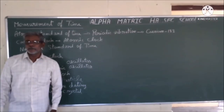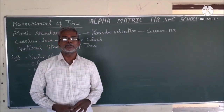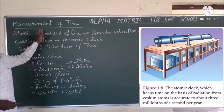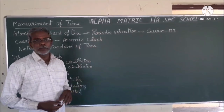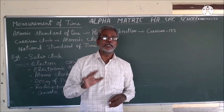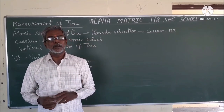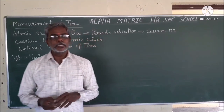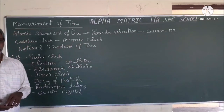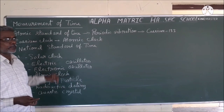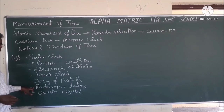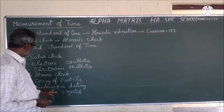Measurement of time. How can you measure time? With the help of a clock. The unit of time is the second. The atomic standard of time is based on electronic vibrations produced in a cesium-133 atom. This cesium clock is also called an atomic clock because it is highly stable and is used as the national standard of time. Some examples of time measurement instruments are: solar clock, electric oscillator, electronic oscillator, atomic clock, decay of particles, radioactivity, and crystal oscillator.